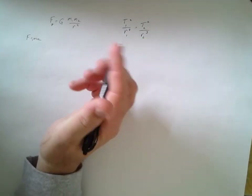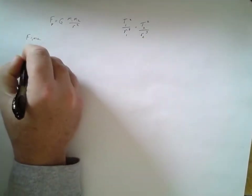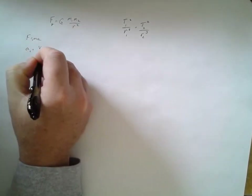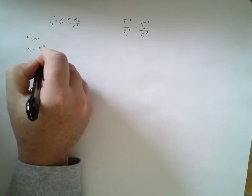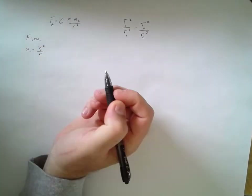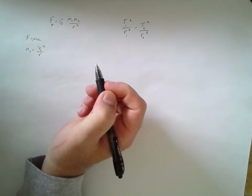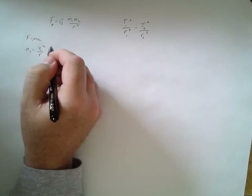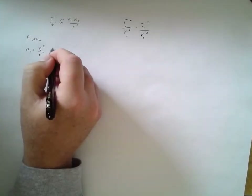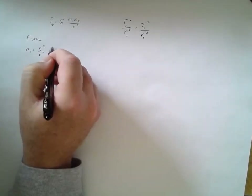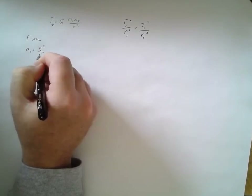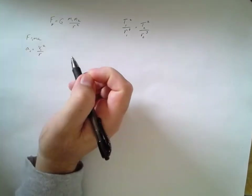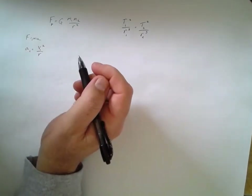We're going to use centripetal acceleration. Centripetal acceleration, a_c, equals velocity squared divided by the radius. The units work out: velocity squared is meters squared per second squared, divided by meters gives meters per second squared — consistent with acceleration.